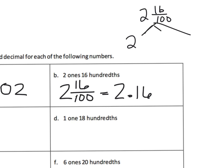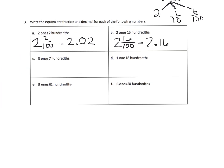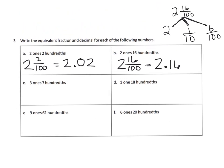Using something like a number bond, we can show the two, and then sixteen hundredths can be thought of as one tenth plus six hundredths. Ten of our hundredths equals one tenth, and the extra six hundredths is six hundredths. We really want students not to blindly push numbers around, but for it to be meaningful.